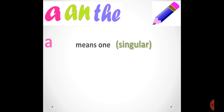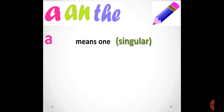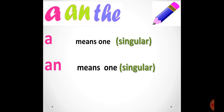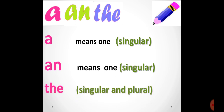Now, what do they mean? 'A' means one, and since its meaning is one, we use 'a' with singular nouns. Then comes 'an' — 'an' also means one, so we use 'an' with singular nouns as well. Then there is 'the' — we use 'the' for both singular and plural nouns. Always remember: 'a' and 'an' are used with singular nouns, but 'the' is used for both singular and plural nouns.